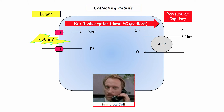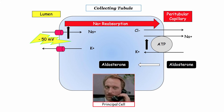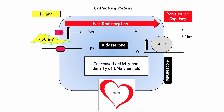Here's the principal cell demonstrating the process of sodium reabsorption. Sodium flows down the electrochemical gradient generated by the sodium-potassium ATPase pump. To maintain that gradient, potassium is secreted. Aldosterone is a steroid hormone that binds to mineralocorticoid receptors both on the plasma membrane as well as hormone receptors in the cytoplasm. Once inside the cell, it is transported into the nucleus, which drives two processes: increased activity of the sodium-potassium ATPase pumps, as well as increased density of the electrochemical sodium channels.